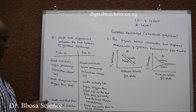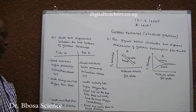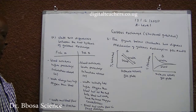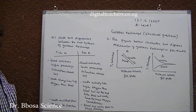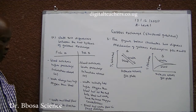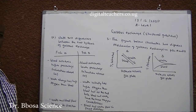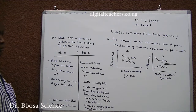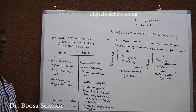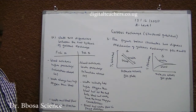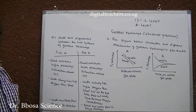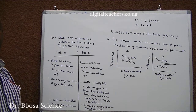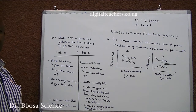3. In fish A, water and blood flow in opposite directions. In fish B, blood and water flow in the same direction.